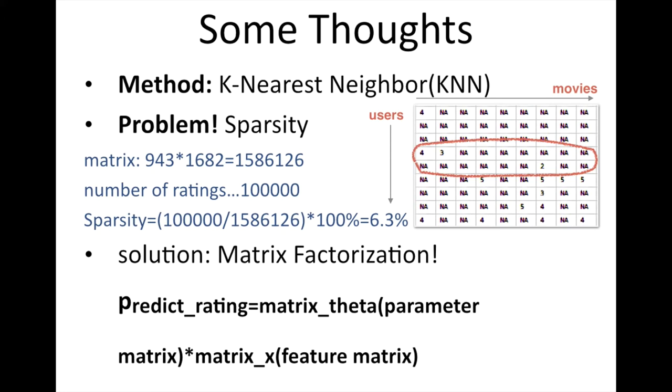Here's an example of the dataset. If we consider two users, their rating intersection can be very small, so it makes no sense to compute the similarity of them. Actually, we can see that the sparsity of the dataset is only 6.3%. That is really small.